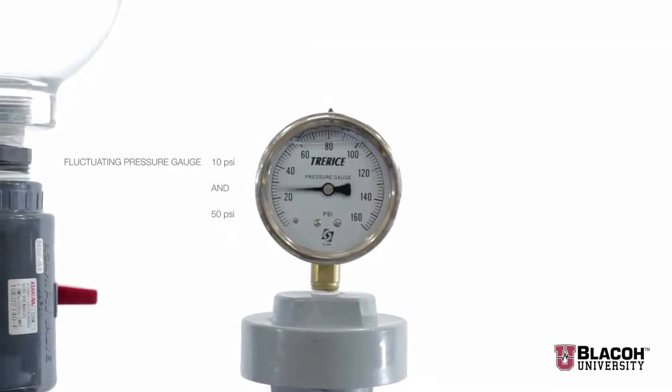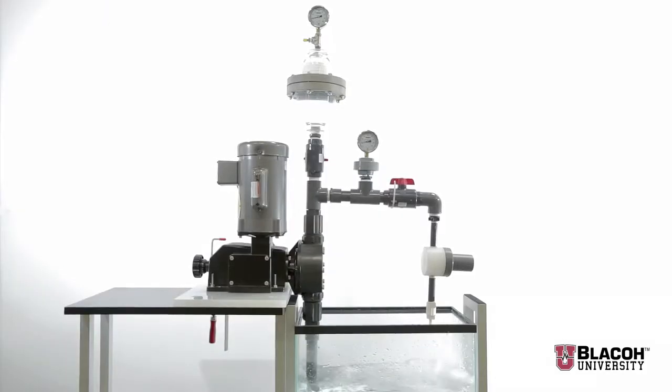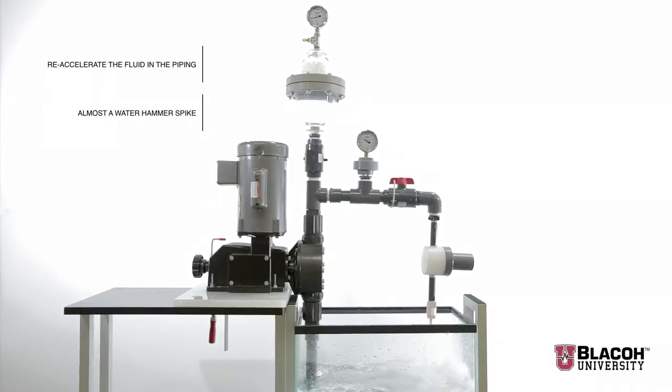The metering pump discharges a very small volume of liquid per stroke. That small fluid volume must re-accelerate the fluid in the piping and in doing so creates almost a water hammer spike.